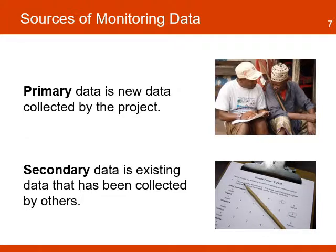Two additional classifications of data include primary and secondary data. Primary data is the new data collected by the project through the use of surveys, meetings, focus groups, discussions, or other methods that may involve direct contact with the respondents. Secondary data is existing data that has been collected by others for another purpose, but that the project might find useful.